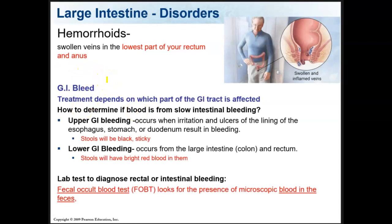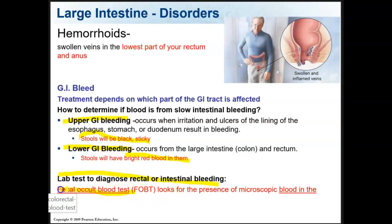Regarding a GI bleed — doctors need to know which part of your GI tract is bleeding, from your mouth all the way down to the end of your large intestine. If it's an upper GI bleed — irritation and ulcers in the lining of the esophagus, stomach, or duodenum — your stools will be black and sticky, with very dark blood. If it's a lower GI bleed — anywhere from the large intestine and rectum, including hemorrhoids — the stools will have bright red blood. A lab test to diagnose rectal or intestinal bleeding is called a fecal occult blood test, which looks for microscopic blood in the feces.